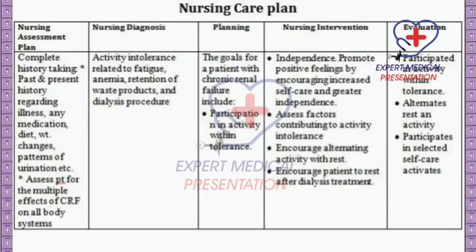Nursing diagnosis: activity intolerance related to fatigue, anemia, retention of waste products, and dialysis procedure. Planning — the goals for a patient with chronic renal failure include participation in activity with tolerance, and promoting independence with positive feelings.